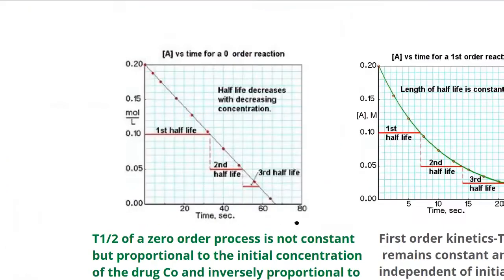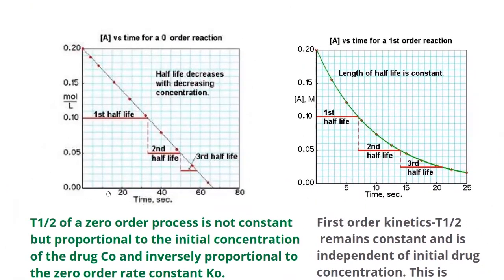Let us have a look at the graph of both types. Here you can see a graph plotted for a zero order reaction and a graph plotted for a first order reaction. In the zero order reaction, the first half-life is relatively long compared to the second and third half-lives. In the first order reaction, the length of the half-life is constant — all three half-lives have the same length — whereas in zero order the first half-life is much longer than the second and third.